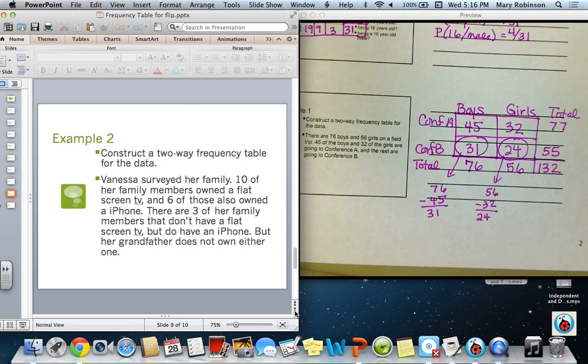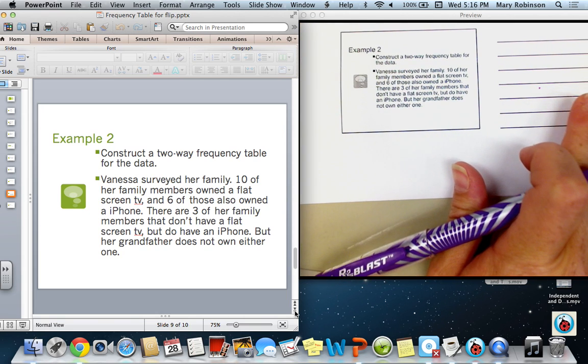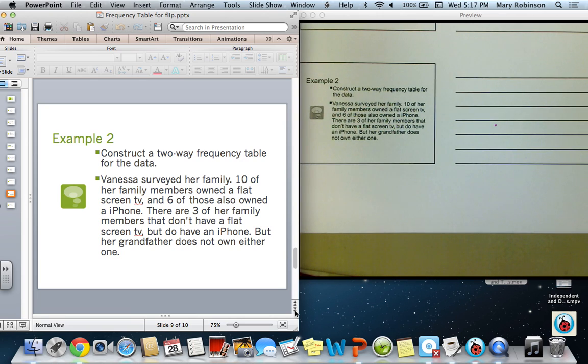Next, we want to construct a two-way frequency table for this given data. So read it carefully. Vanessa surveyed her family. Ten of her family owned a flat-screen TV, and six of those also owned an iPhone. There are three of her family members that don't have a flat-screen TV, but do have an iPhone. But her grandfather does not own either one. So, in determining what headings to use, they either have an iPhone, or they don't have an iPhone. And they either have a flat-screen, or they do not have a flat-screen. So, in constructing this frequency table, I'm going to use FS to represent flat-screen, and then No FS to represent no flat-screen. Similarly, I'll come over here and put iPhone, and No iPhone.